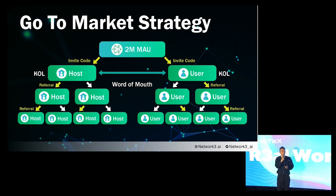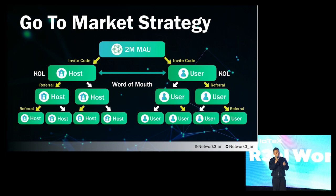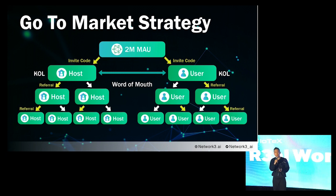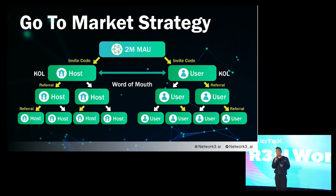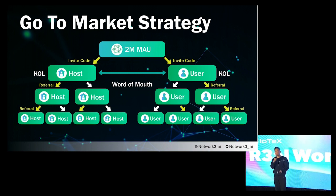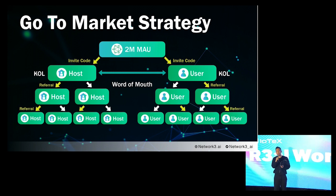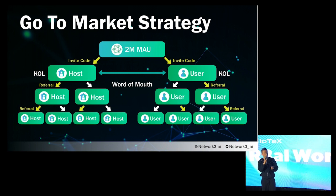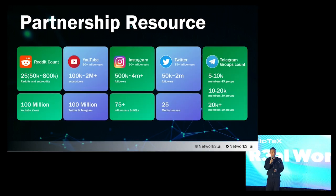Our go-to-market strategy is to leverage our current 2 million MAU to divert traffic to hosts as node runners. From day one, they will see a lot of traffic and can earn a lot of credits, which can be converted to tokens in the future. We also have a referral program — participants can get a two-layer cut for referring another node to join our network.